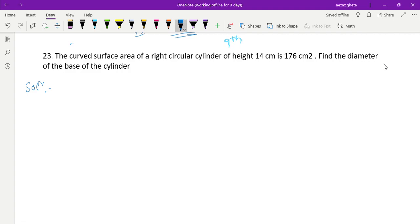The question states: The curved surface area of a right circular cylinder of height 14 cm is 176 cm². We have to find the diameter of the cylinder. So according to the question, CSA of the cylinder is given as 176 centimeter square.